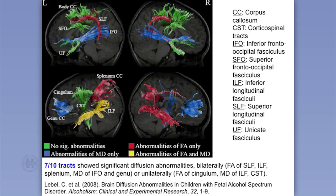Everything shown in green had no significant abnormalities, but all tracks shown in blue, red, or yellow showed abnormalities in either measure — on the right side, left side, or both. We found that 7 out of the 10 tracks measured had abnormalities in the connections; they weren't moving as cohesively in the same direction, and we saw significant differences in track integrity. One key area is the superior longitudinal fasciculus, primarily involved in language — we know kids with FASD have such difficulty with language processing, and this connects Wernicke's and Broca's areas.